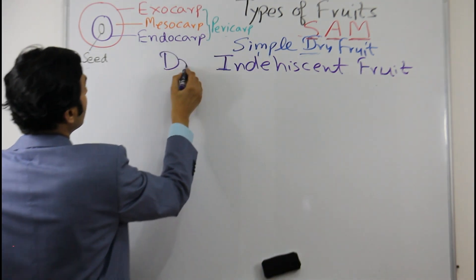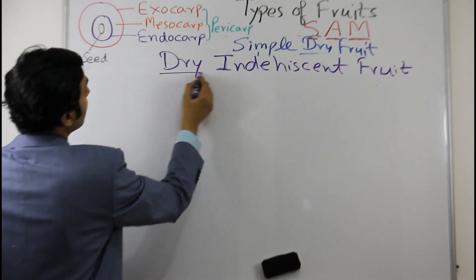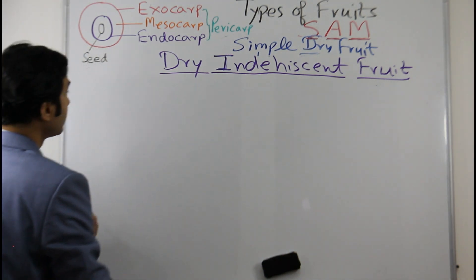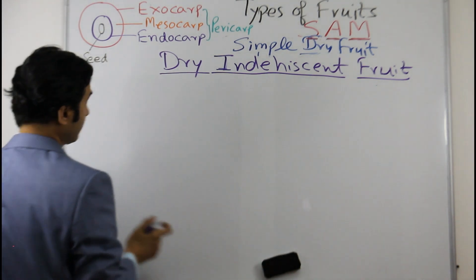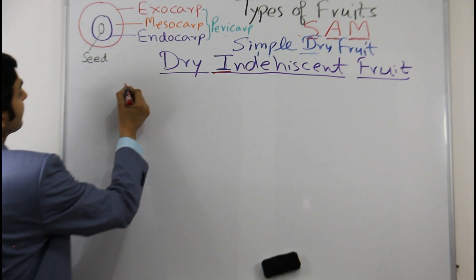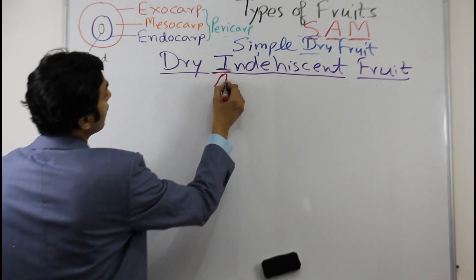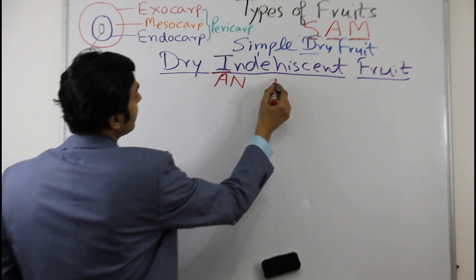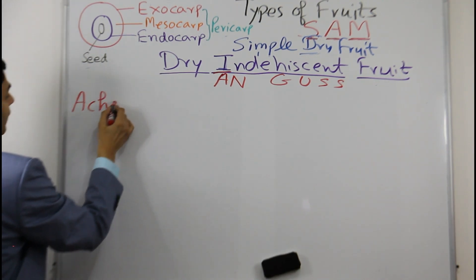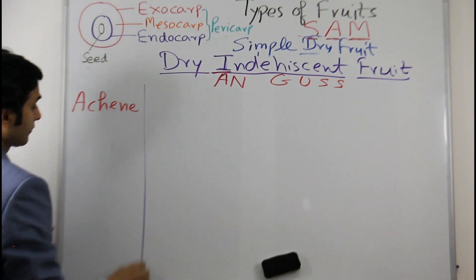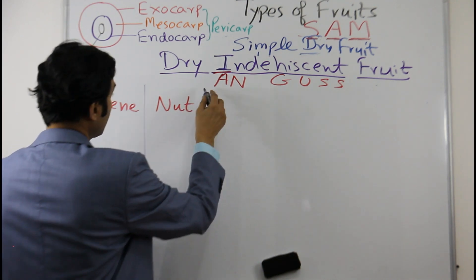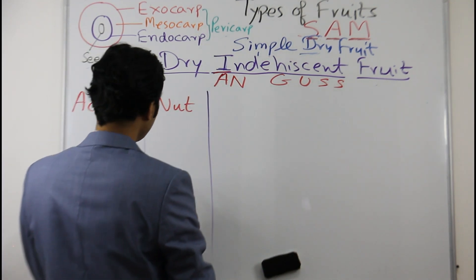Now we will discuss about dry indehiscent fruit. Let me write the names once again on the board. Since it starts from 'I', as I said, write 'N' and then you don't have to guess. So: A means achene, N means nut, G means grain.